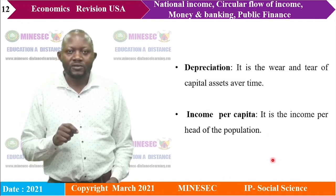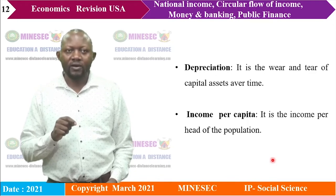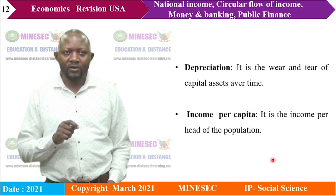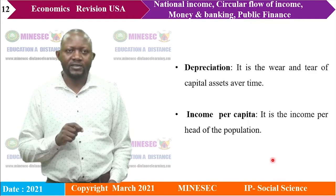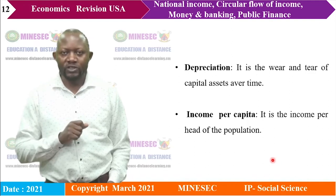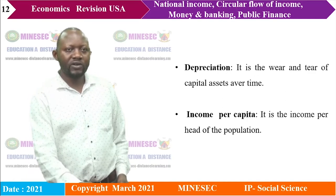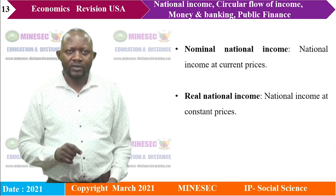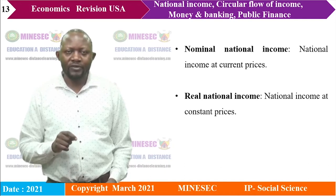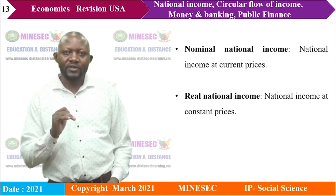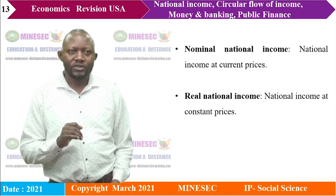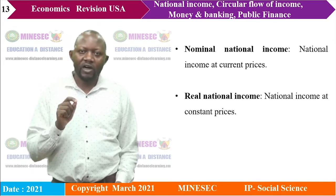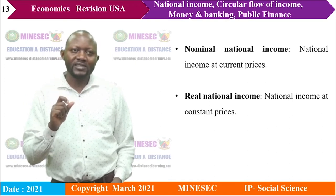Other concepts include depreciation — the wear and tear of capital assets over time, also called replacement investment or capital consumption. Income per capita is income per head of the population, calculated by dividing national output by population. Nominal national income is national income at current prices — the money value of goods and services estimated at prevailing market prices. Real national income is national income at constant prices — estimated using a selected base year to get the real output.